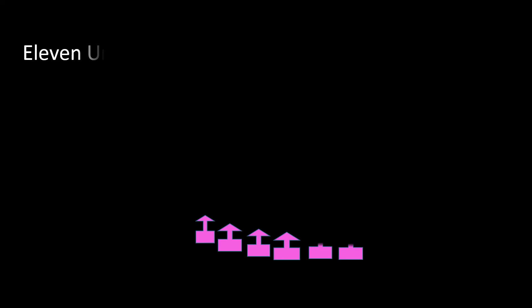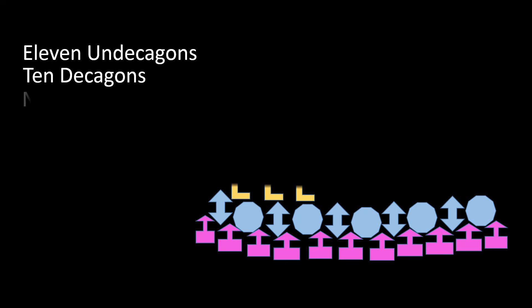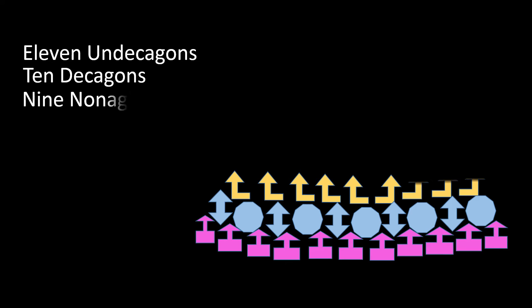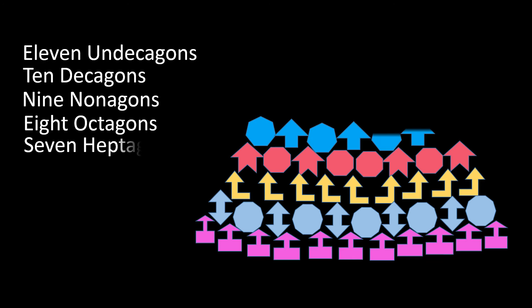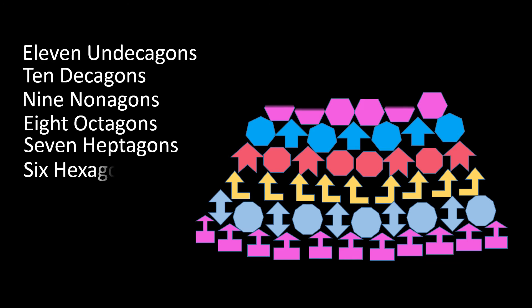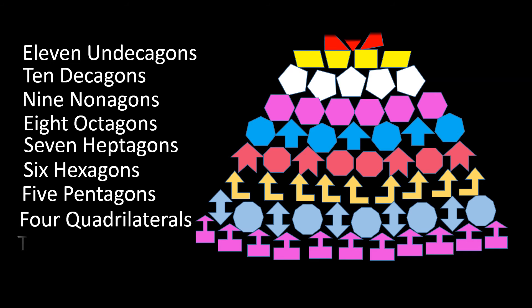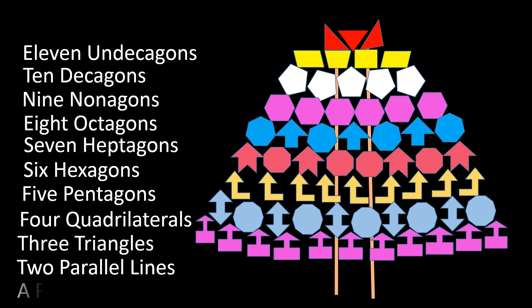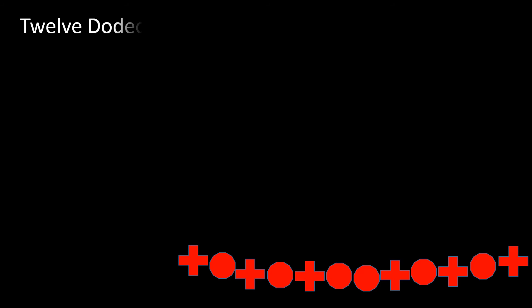On the eleventh day of geometry, my teacher gave to me eleven hendecagons, ten decagons, nine nonagons, seven heptagons, six hexagons, five pentagons, four quadrilaterals, three triangles, two parallel lines, and a point on a line in a plane.